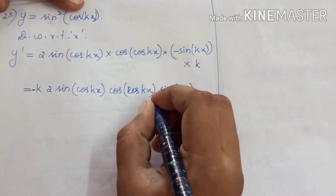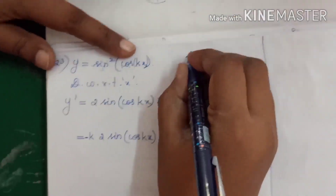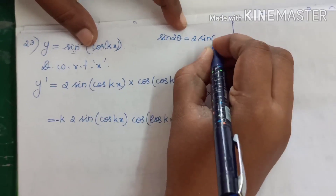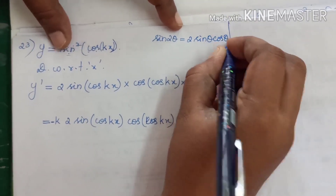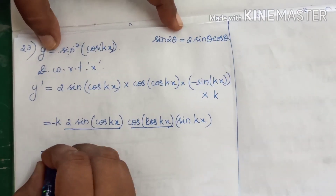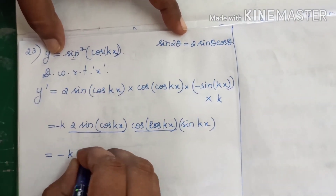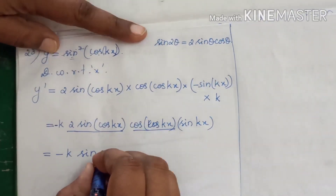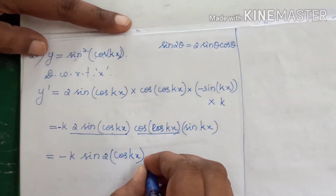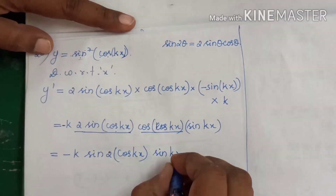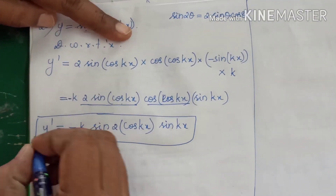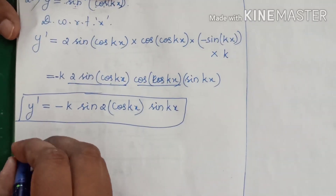Now we know the formula: sin 2θ is equal to 2 sin θ cos θ. So we can write this as minus k into sin 2 of cos kx — where our θ here is cos kx. Therefore, y dash is equal to minus k sin 2(cos kx) into sin kx.